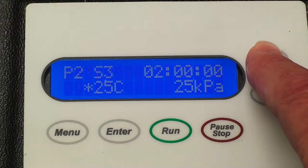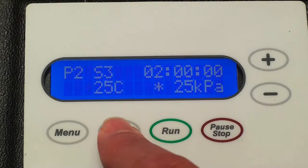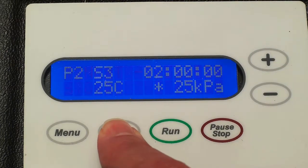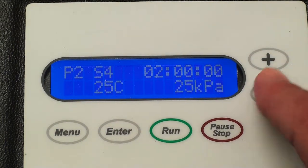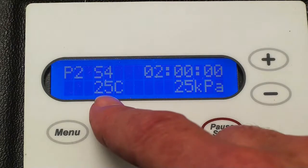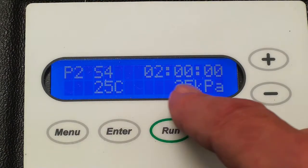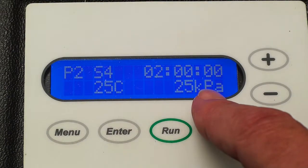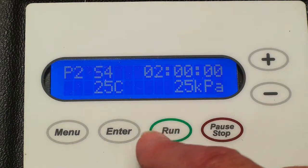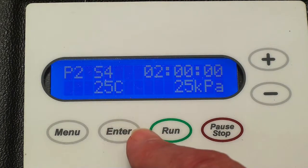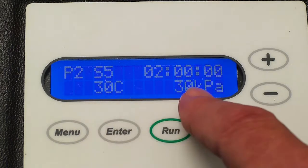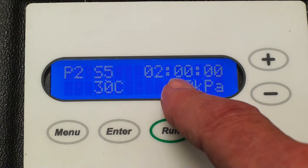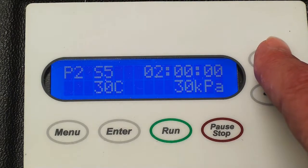25 pascals, you see we're decreasing the pressure, increasing the vacuum, however you want to put it. And that's again step 4, 2 hours, 25 degrees centigrade and 25 kilopascals. And then the final step, 30 degrees, step 5 for 2 hours with the 30 kilopascals.